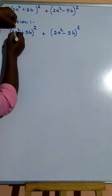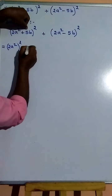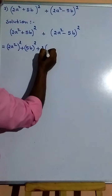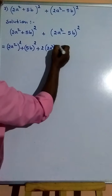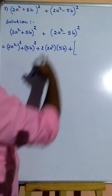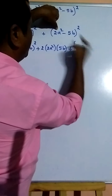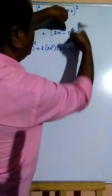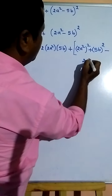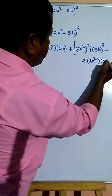Applying (a + b) whole square: a is 2a squared, b is 5b. So we get (2a²) whole square plus (5b) whole square plus 2 times 2a squared times 5b, using a capital bracket.